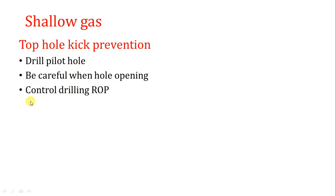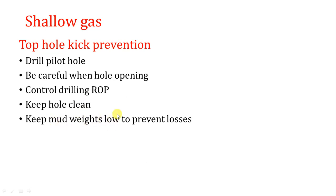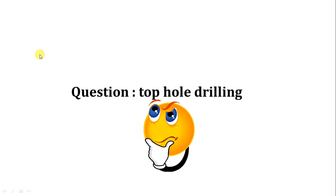Number two — be careful when opening the hole. Number three — control the drilling ROP so the annulus is not loaded with too many cuttings, preventing ESD and mud weight differences during circulation. Also, keep the hole clean by making wiper trips regularly. Keep mud weight as low as possible — not high — to prevent losses and to pump out of the hole. Pump out of the hole at high speed to avoid swabbing and other well control issues.